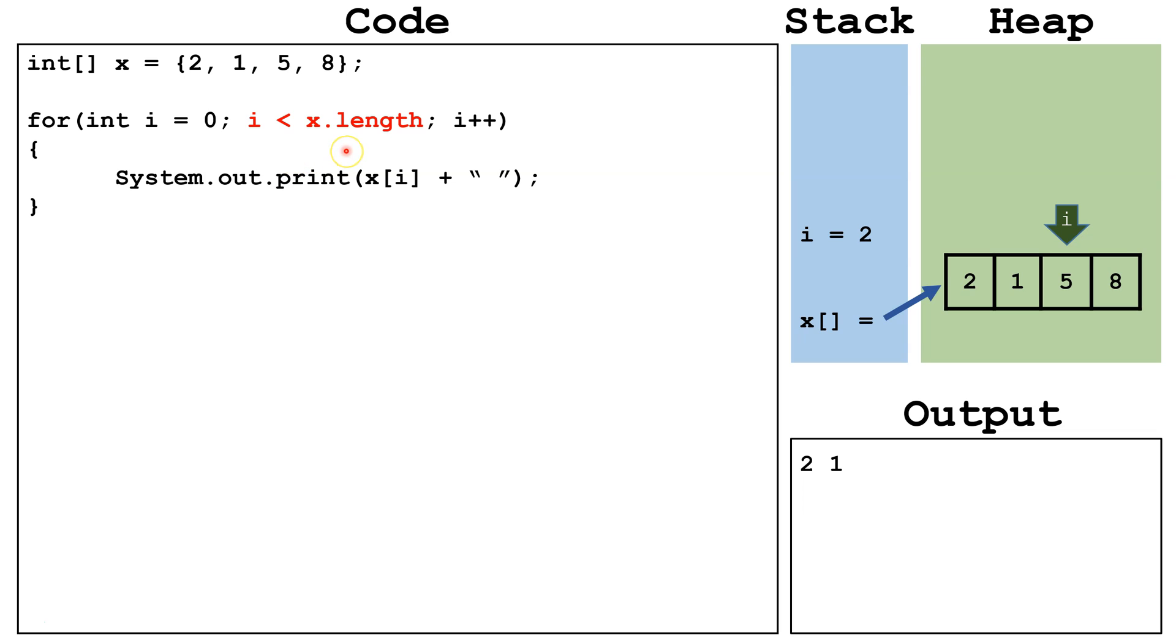We check is i still less than the length of the array. It is. So we continue the loop. We print out x index 2, which is 5, and then a space. Now we increment i to 3.